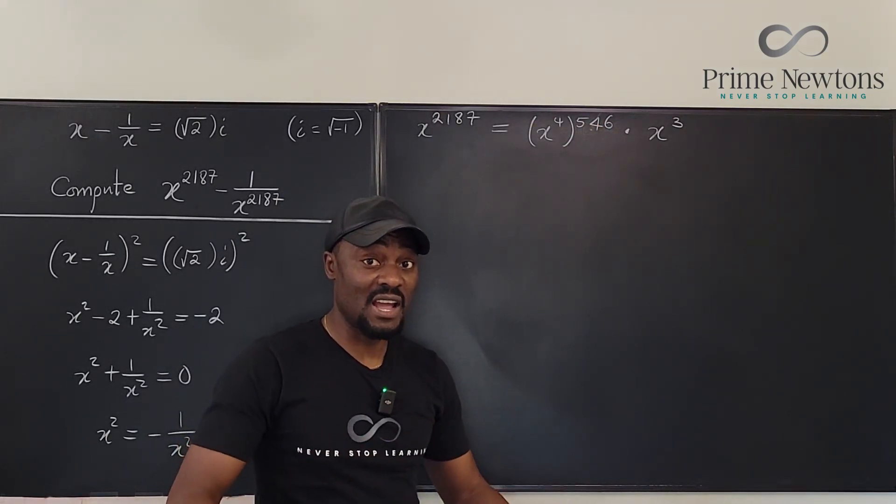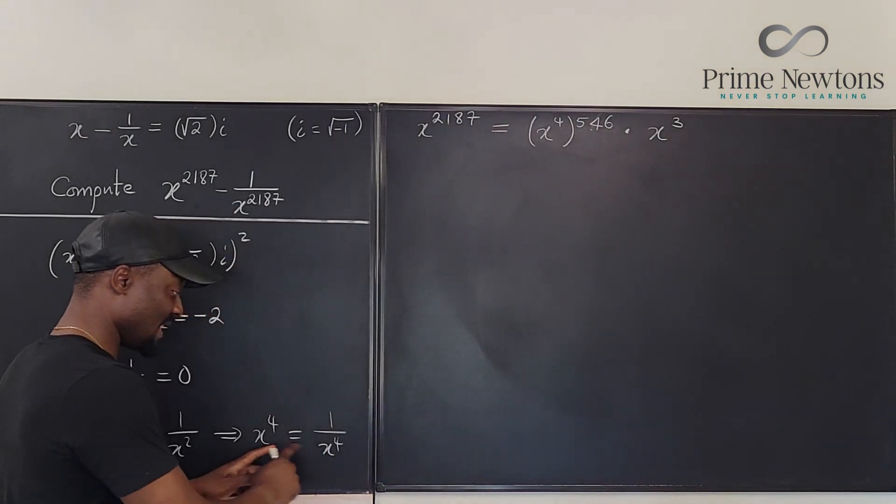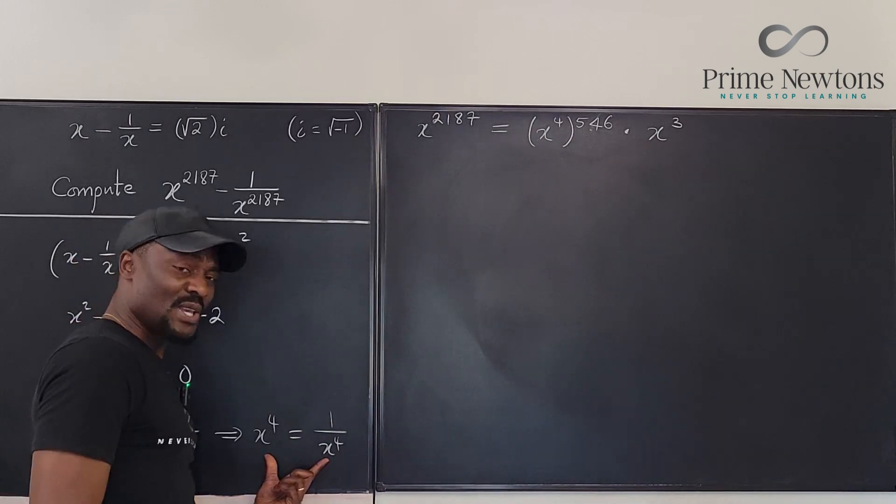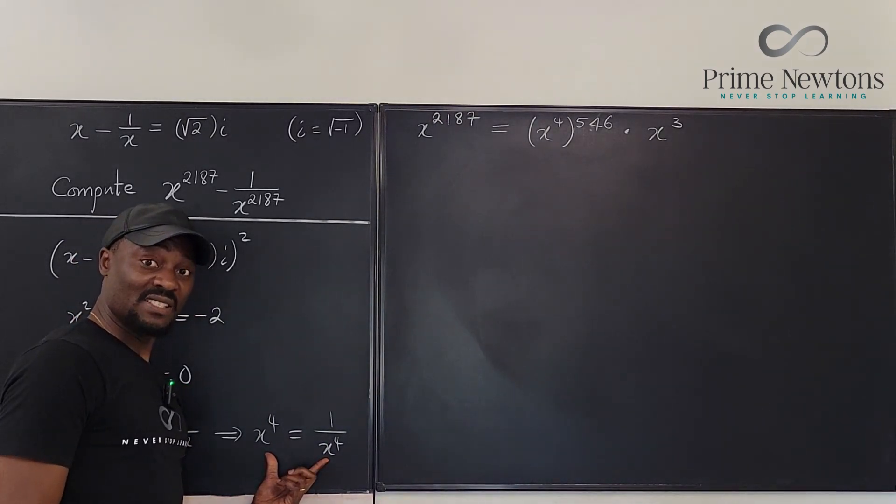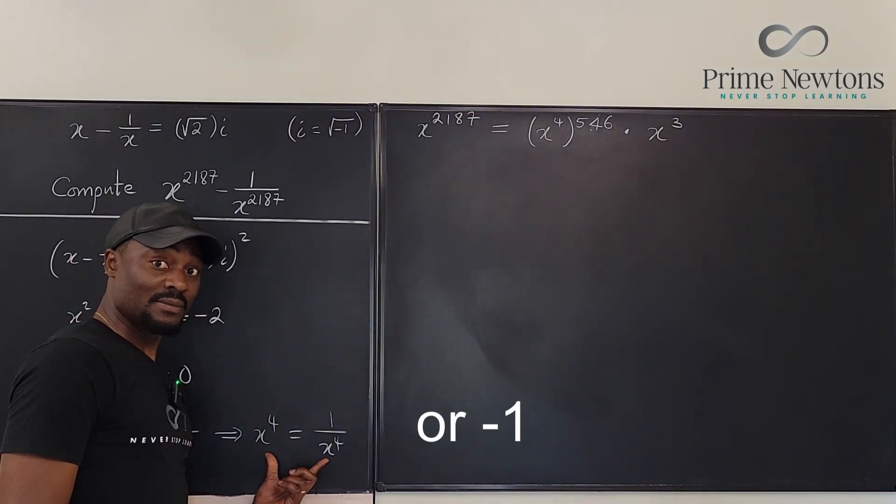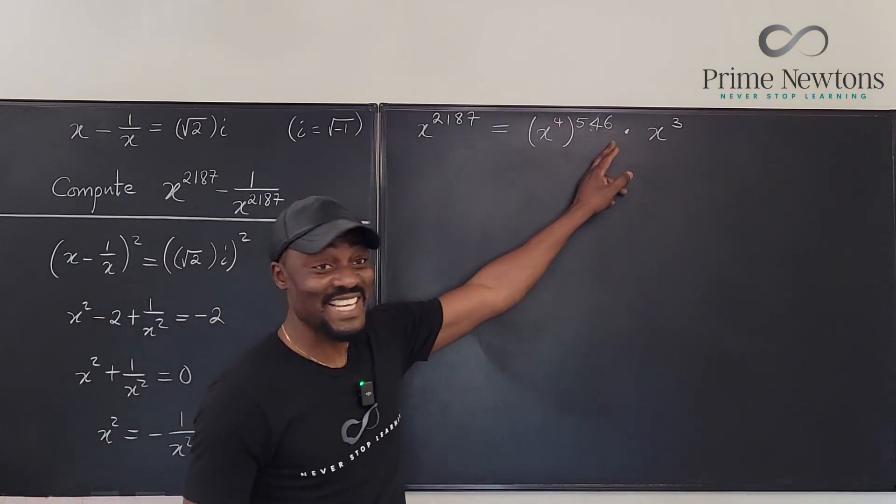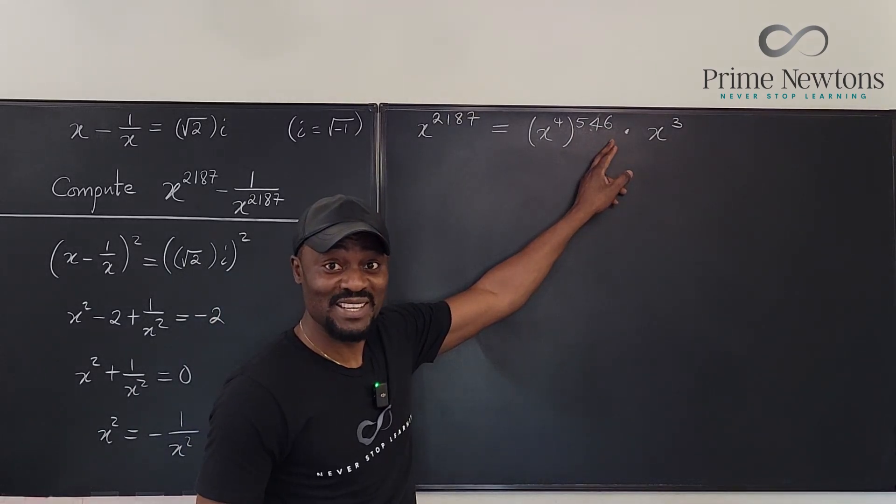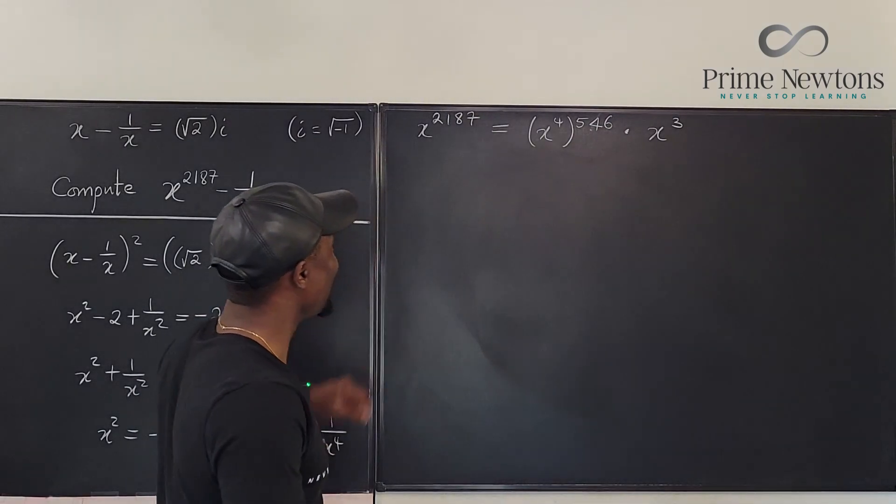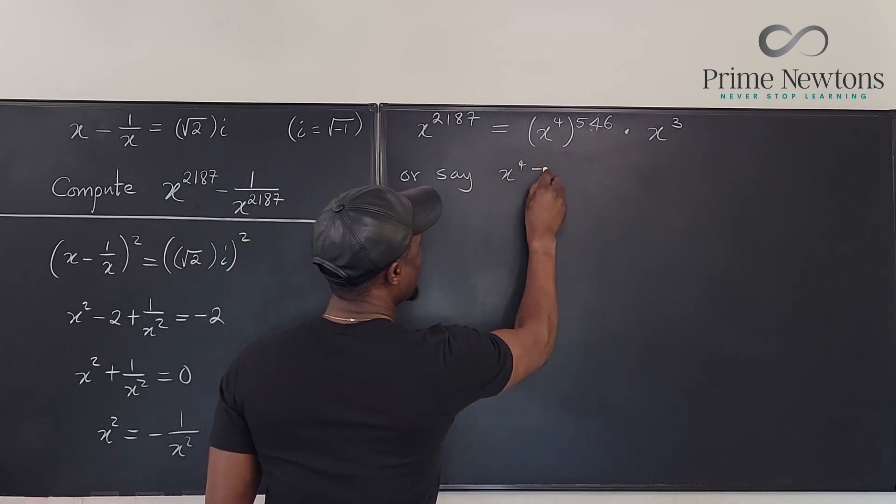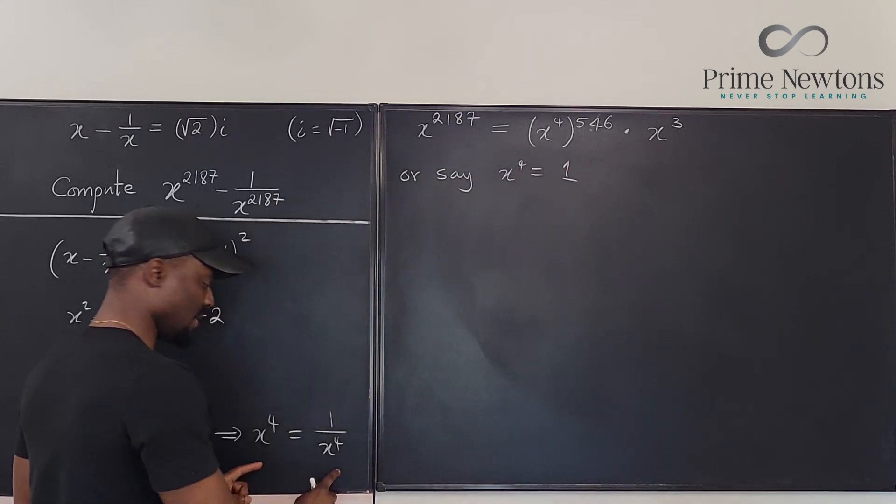Because remember, this is what we have. Because every time you do this, this and this are going to be the same, and actually you can from here conclude that x to the fourth is equal to 1. Because the only number whose reciprocal is itself is 1. So I can say x to the fourth equals 1, and that makes my life a lot easier instead of using modular arithmetic.